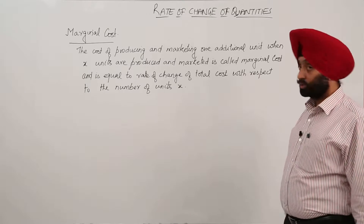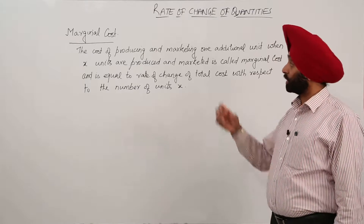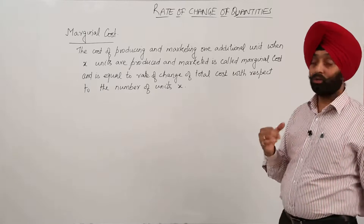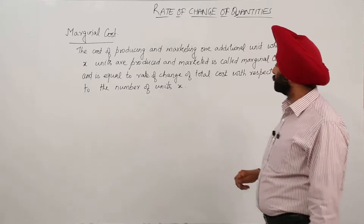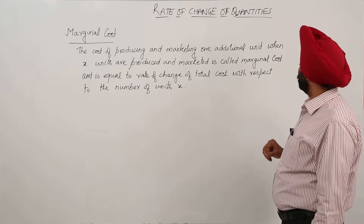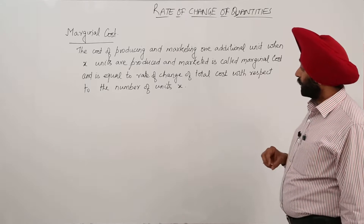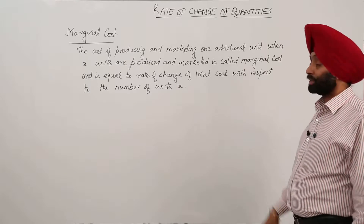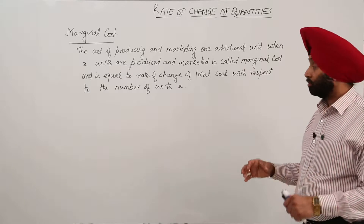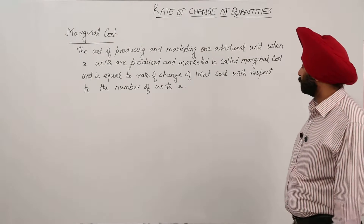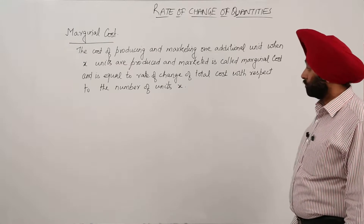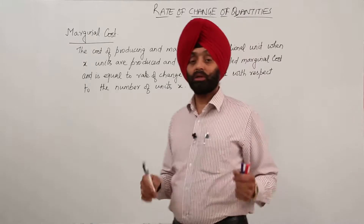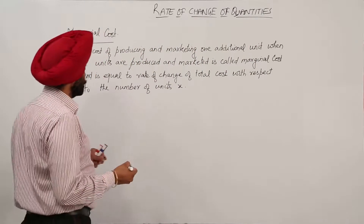In our chapter on rate of change of quantity, one term we are having is marginal cost. The cost of producing and marketing one additional unit when x units are produced and marketed is called marginal cost. Marginal cost is equal to the rate of change of total cost with respect to the number of units x.